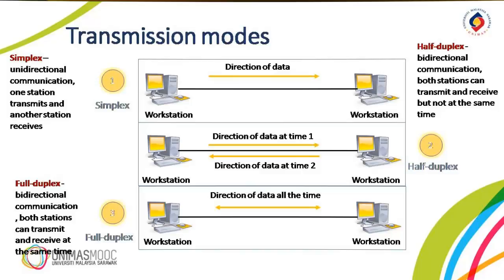Either the link must contain two physically separate transmission paths, one for sending and the other for receiving, or the capacity of the channel is divided between signals traveling in both directions. One common example of full-duplex communication is the telephone network. When two people are communicating by a telephone line, both can talk and listen at the same time.